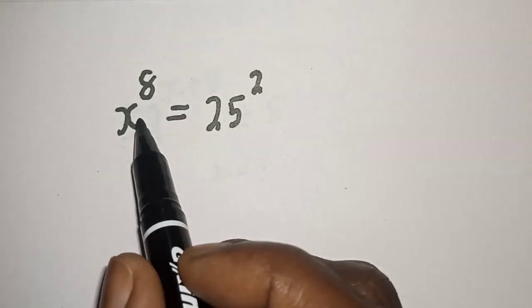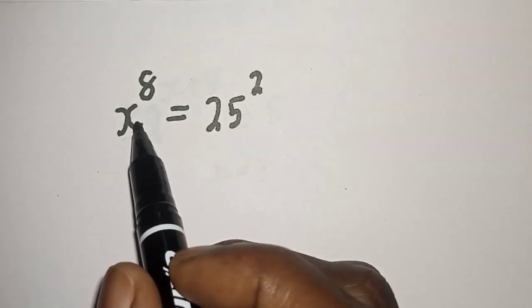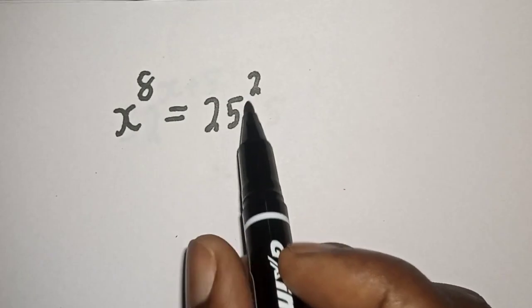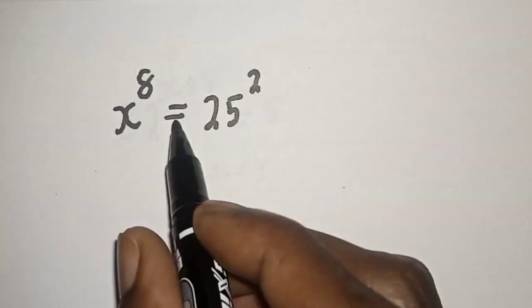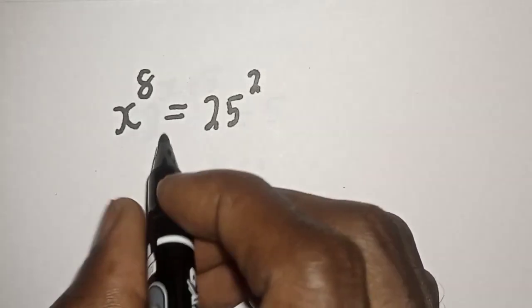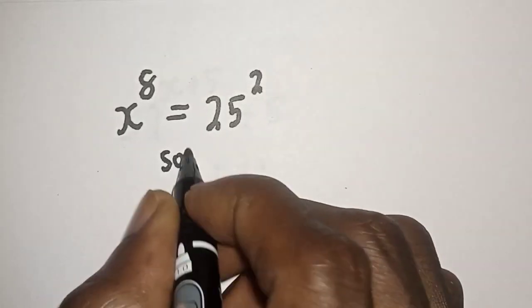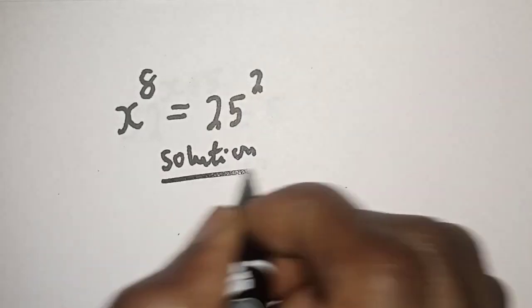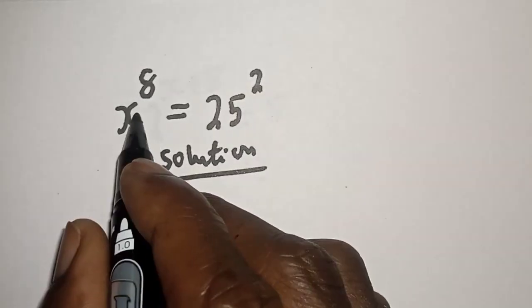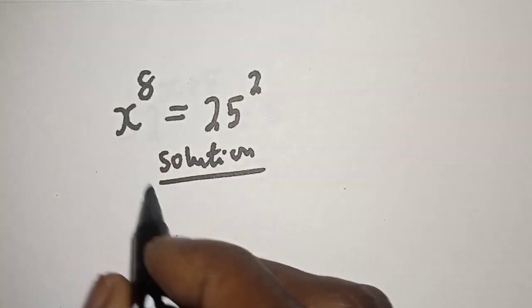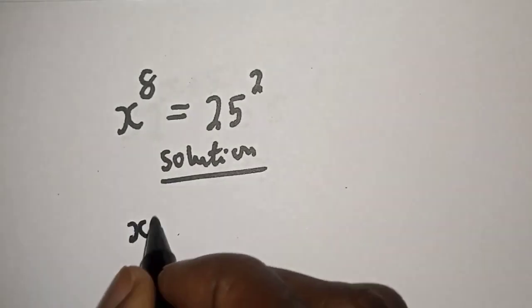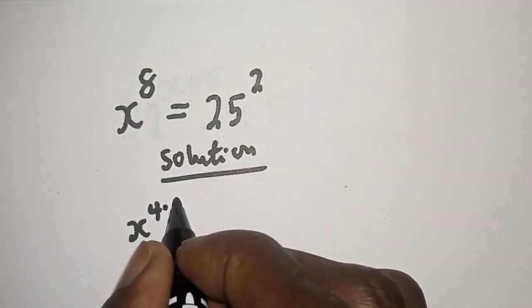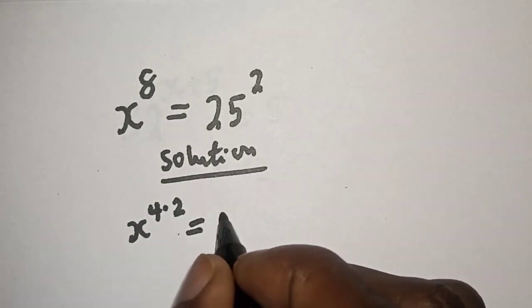Hi everyone. How to solve s raised to power 8 is equal to 25 squared. s raised to power 8 can be written as s raised to power 4 multiplied by 2.